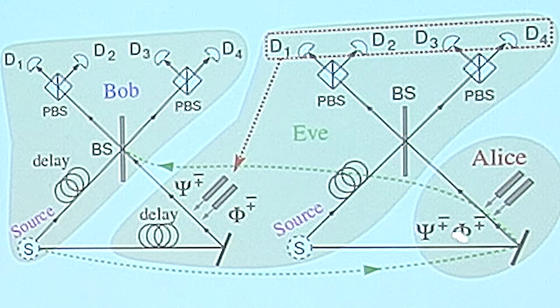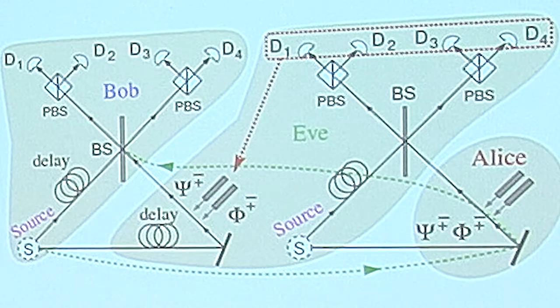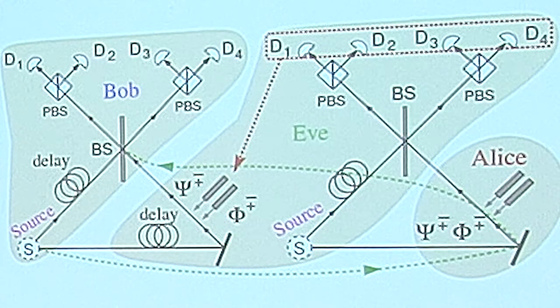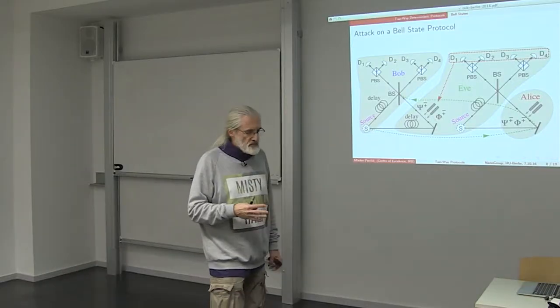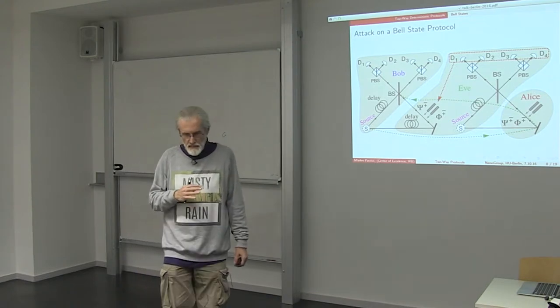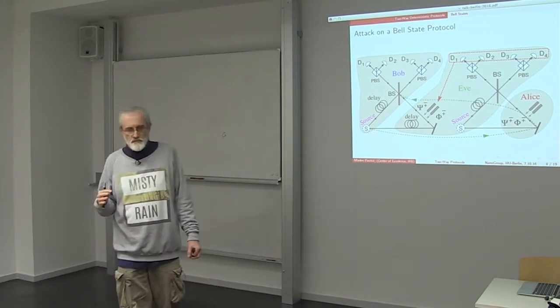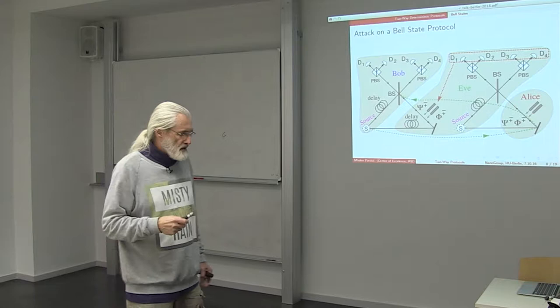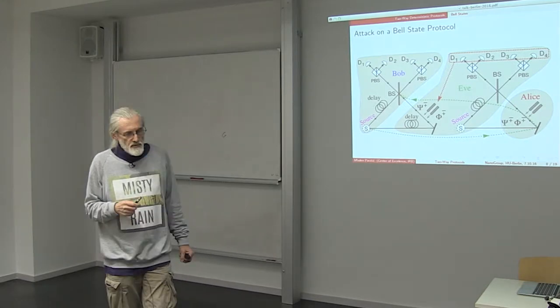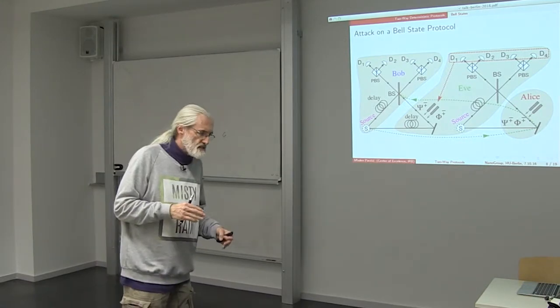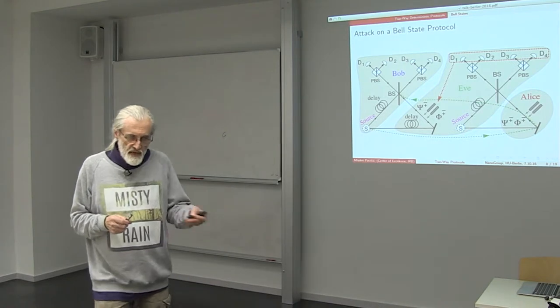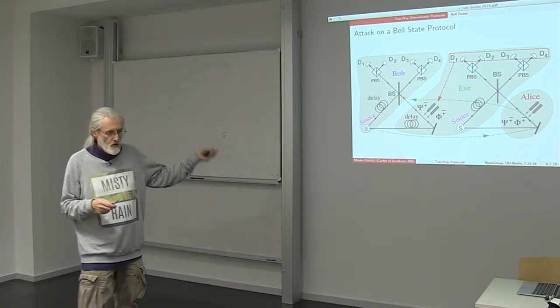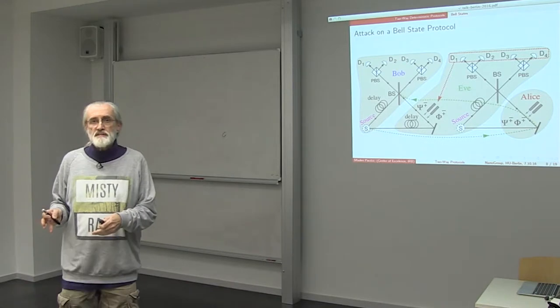After decoding the messages with the same measurements as Bob would do when receiving Alice's messages, she encodes Bob's photon in the same way in which Alice encoded her photon after receiving it. That means that Eve receives every single message Alice intended to send to Bob and is able to resend it to Bob without making any disturbance of the messages in the message mode.